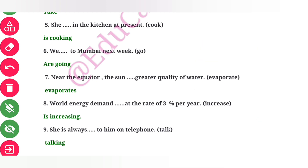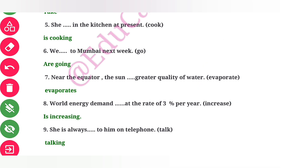Question 7: Near the equator, the sun rises earlier. The sun is a singular subject, so we use the simple present tense form with 's' or 'es'.